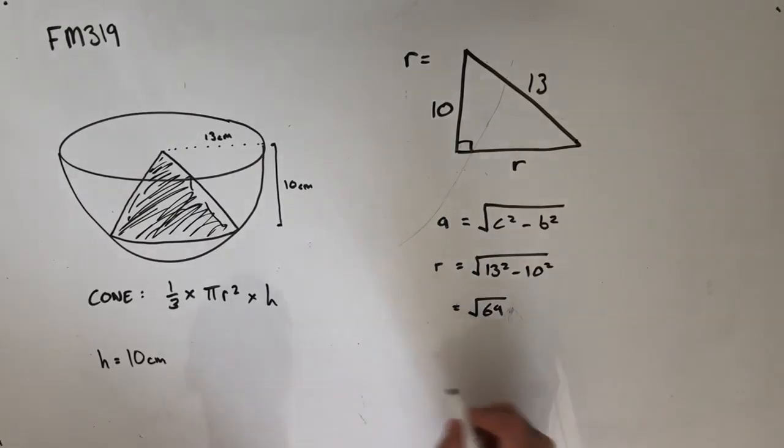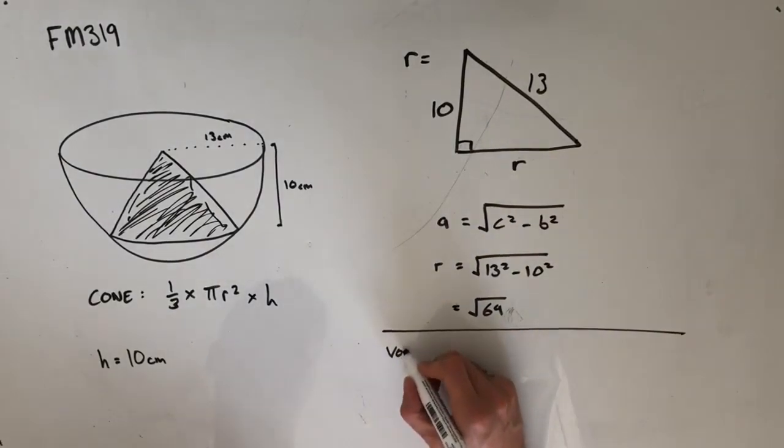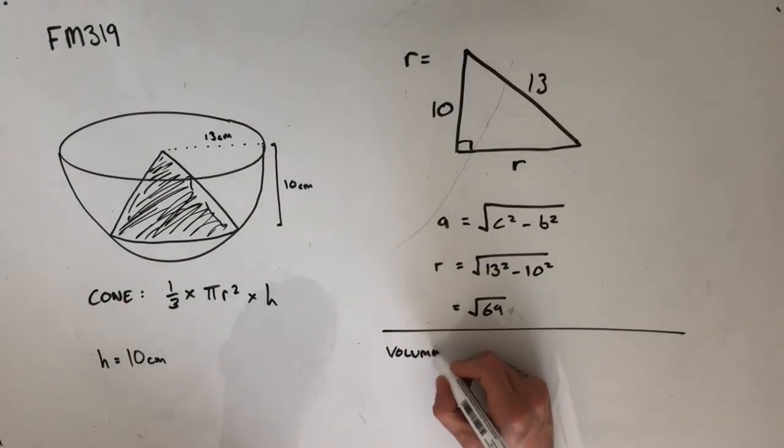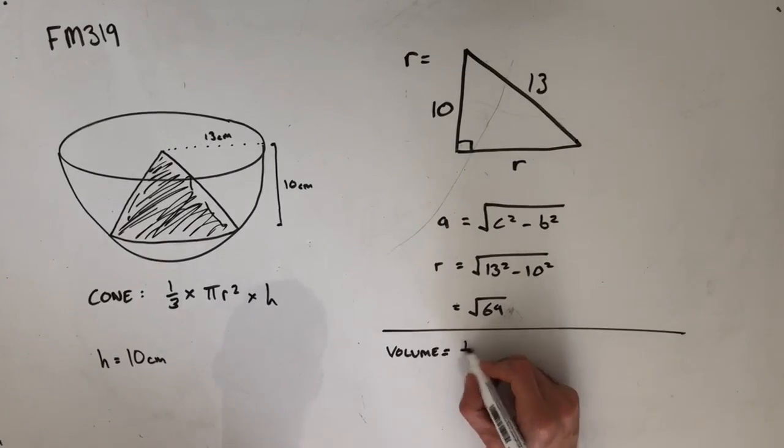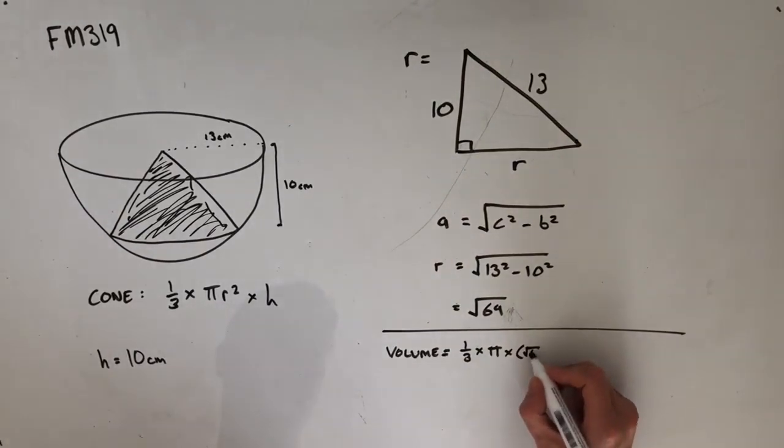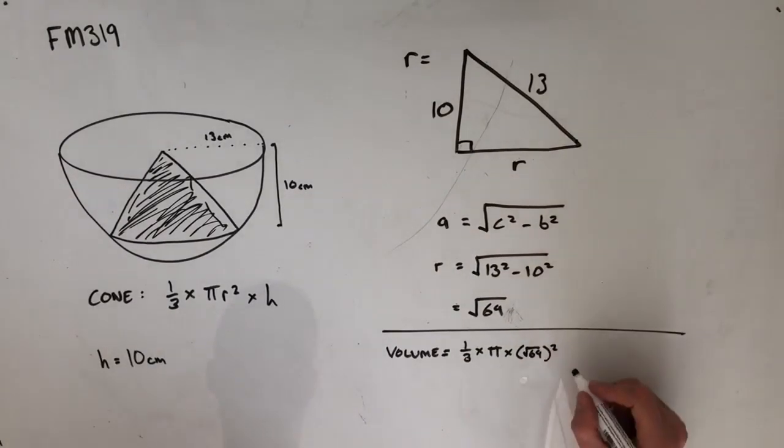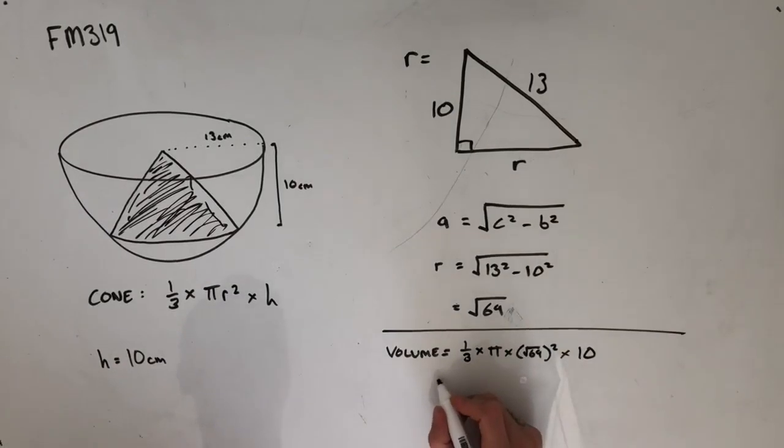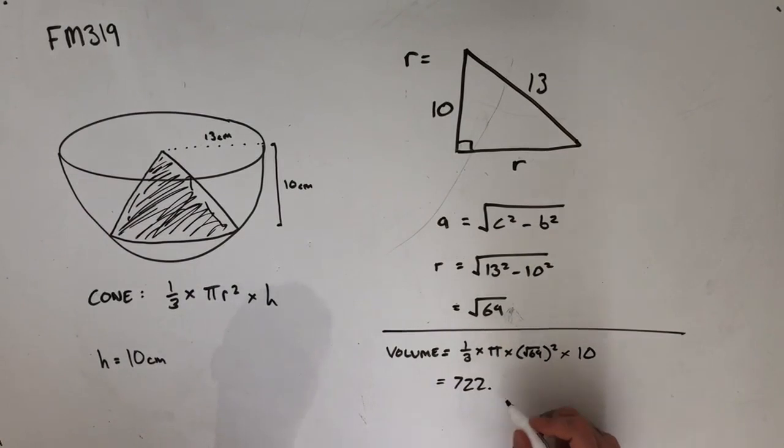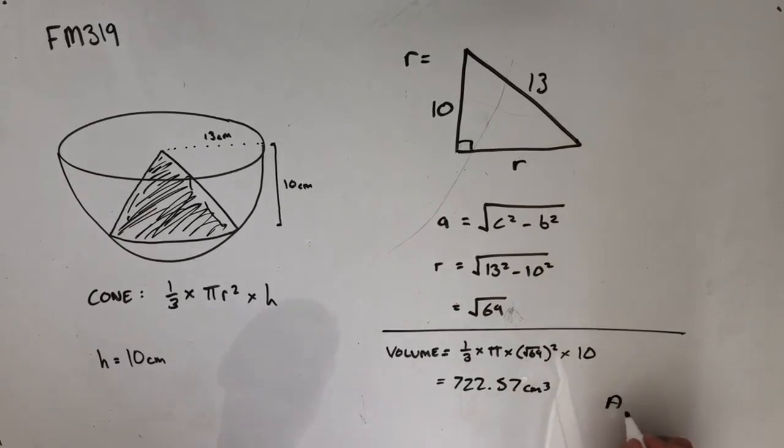Plugging that all back into our original equation for the volume of a cone, our volume is going to be equal to one-third times pi times root 69 squared times our height of 10. Plugging that all into a calculator should land you with an answer of roughly 722.57 centimetres cubed, which looks very much like option A.